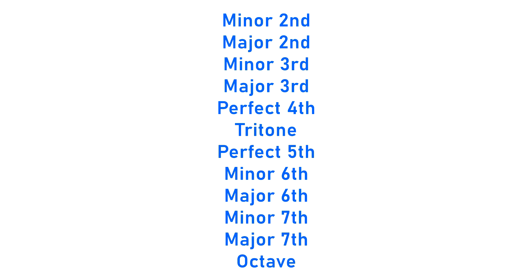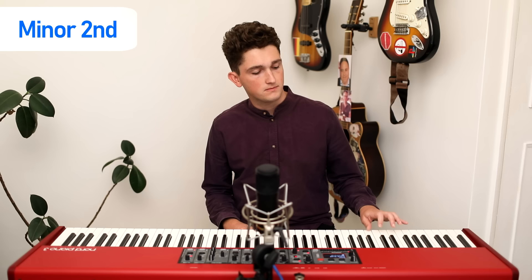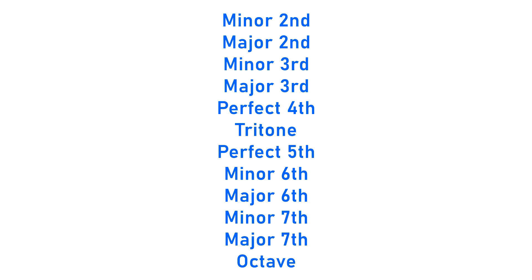Let's start with the smallest interval possible in Western music: the minor second, otherwise known as the semitone or half step. In some ways this is one of the easier intervals to identify because the notes are so close to each other that you can't really imagine a smaller interval. So if it sounds like it couldn't get any smaller, it probably is a semitone. The classic example is the Jaws theme by John Williams — the bulk of that theme literally pivots back and forth between E and F, a semitone.